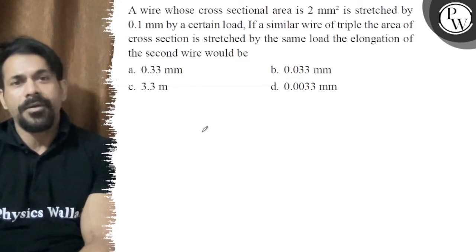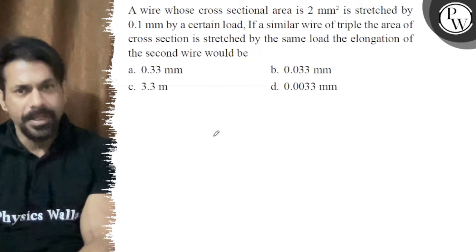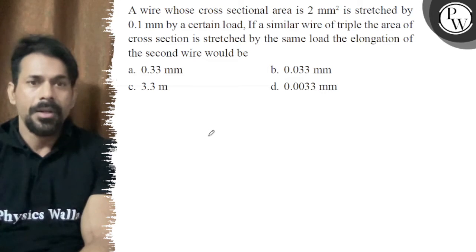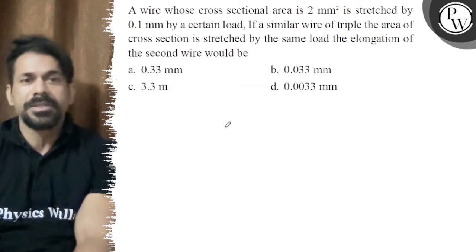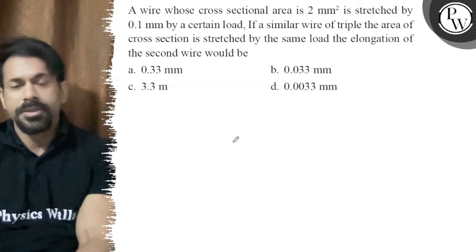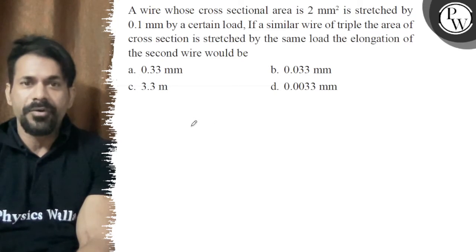Hello, let's see the question. A wire whose cross-sectional area is 2 mm² is stretched by 0.1 mm by a certain load. If a similar wire of triple the area of cross-section is stretched by the same load, the elongation of the second wire would be?